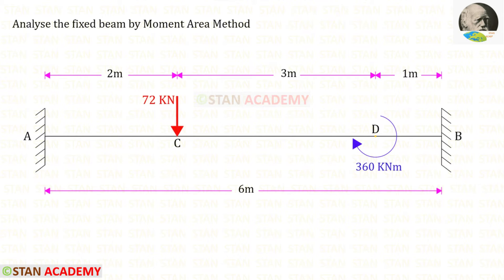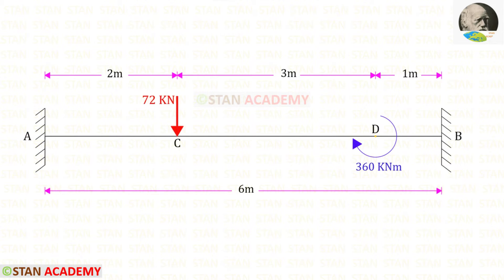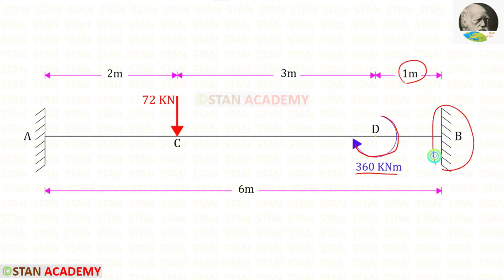Hello everyone. Today we are going to analyze this fixed beam by the Moment Area Method. The span of the beam is given as 6 meters. In this beam there is a point load of 72 kilo Newtons acting at a distance of 2 meters from the left support. Also there is a concentrated moment of 360 kilo Newton meters acting at a distance of 1 meter from the right support, and it is in the clockwise direction.